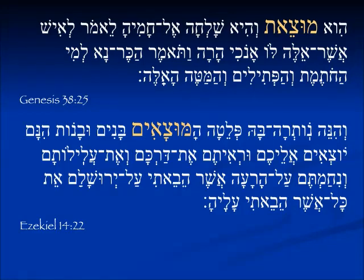In Ezekiel 14, talking about the remnant which has escaped — and they are being brought out, sons and daughters. Mutsa'im — this is an appositive — sons and daughters. Behold, they are coming out. The ones who are being brought out, they are coming out.